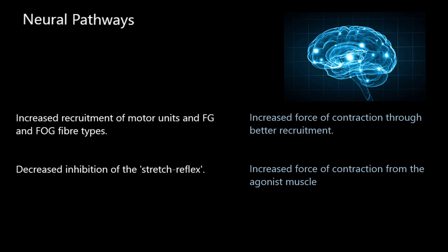So firstly, the neural pathways. The part of the brain responsible for controlling muscular movement is called the cerebellum. What we're talking about in terms of neural pathways is what is happening to the connections between the brain and the muscles in order to contract them more forcefully. A motor unit is a neuron that comes from the cerebellum and is attached to maybe a thousand muscle fibres — we call that entire thing a motor unit.